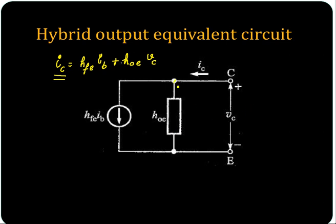What is the voltage across this? It is VC. So what is the current through this? It is HOE times VC. HOE is admittance. Plus this current source — you know the output circuit is represented using a current source.